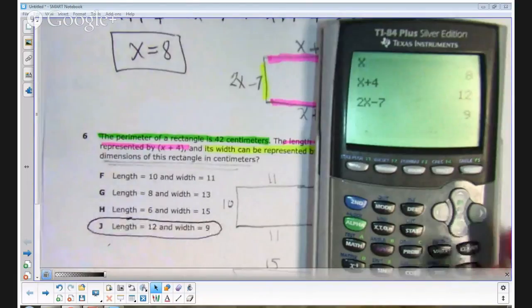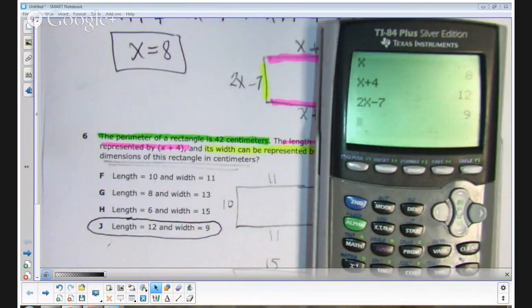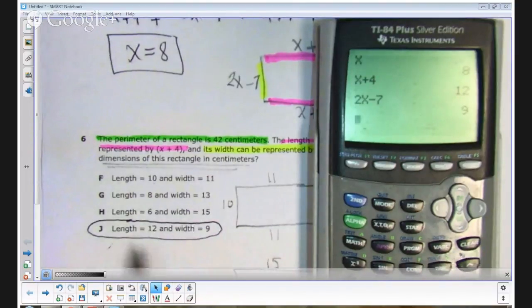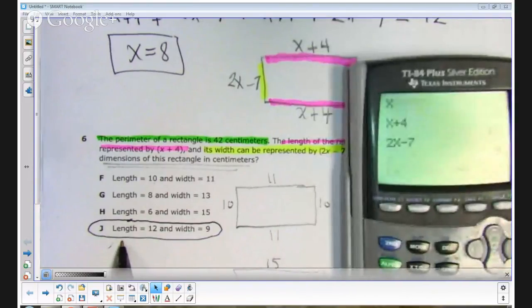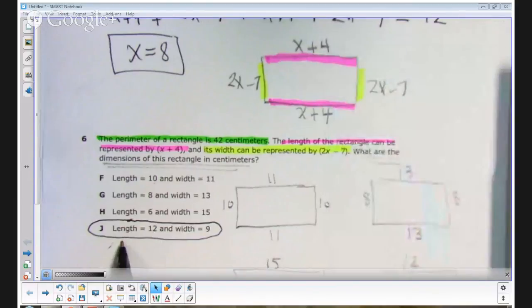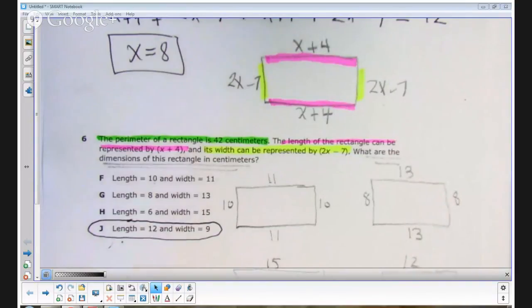Okay, this question was answered correctly by only 38% of the students who took this test. That means 62% of the students missed this problem. If you will try some of these strategies when you take your star test on an item like this, you should improve your chance of getting this item correct. Again, the correct dimensions for the rectangle with the perimeter of 42 centimeters was J. The length was 12 centimeters and the width was 9 centimeters.